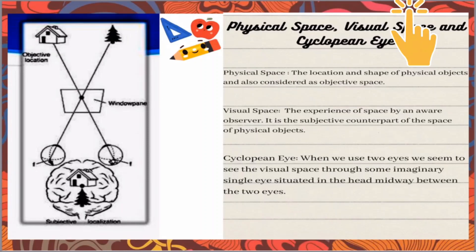Okay, so today we are going to discuss about physical space, visual space, and cyclopean eye, and also a bit about normal correspondence area. In this slide I want you to see this diagram first.